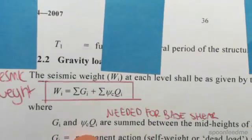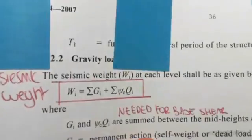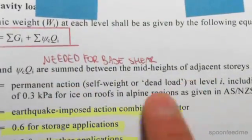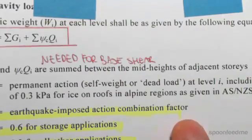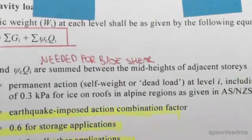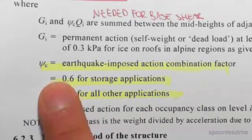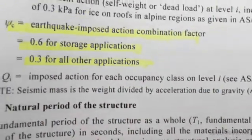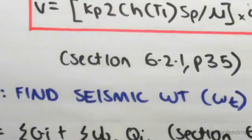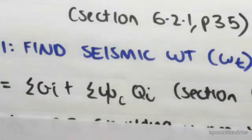Where gi and psi c qi are summed between the mid-heights of adjacent stories. gi is the permanent action at level i, including allowance of 0.03 kPa for ice on roofs. Psi c we're going to be seeing now, and q is the imposed action on each floor. So we're summing up the dead load and live loads times the live load factor. We're summing each of those up on each floor.